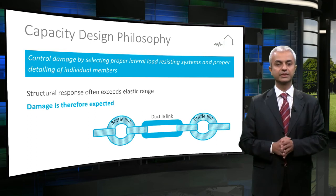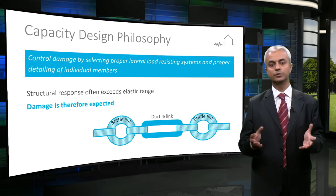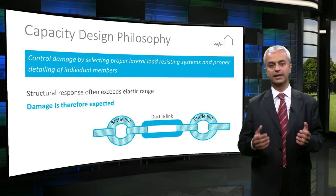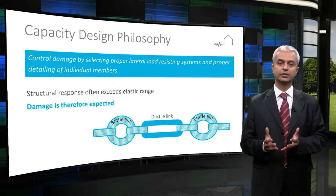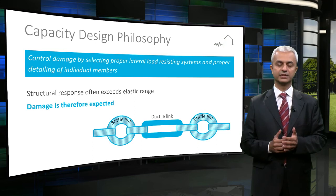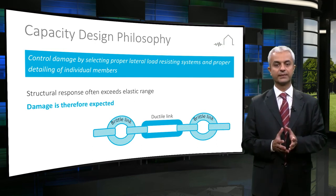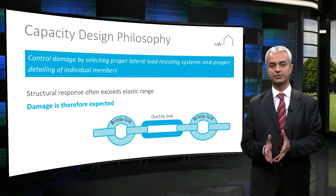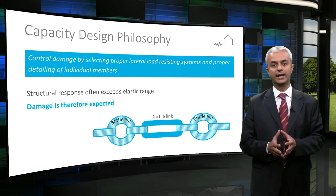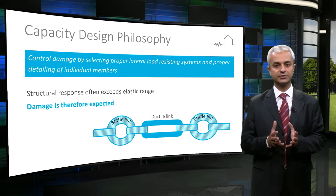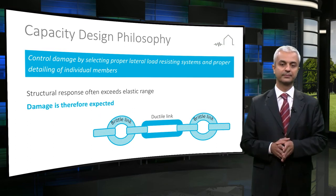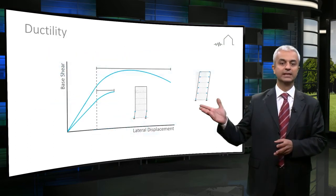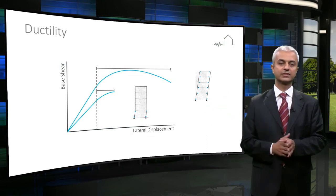This phenomenon can be visualized by a chain which is formed by brittle and ductile links. The ductile link of the chain can undergo the required inelastic deformation. Predetermining the potential damage regions, or plastic hinge locations in a structure, and applying proper detailing to these regions is a key element of the capacity design philosophy.